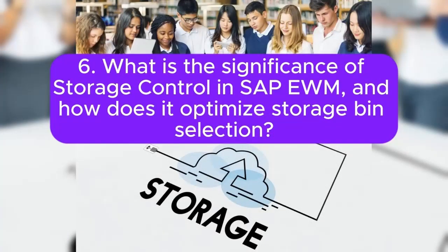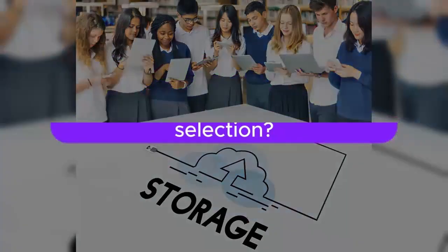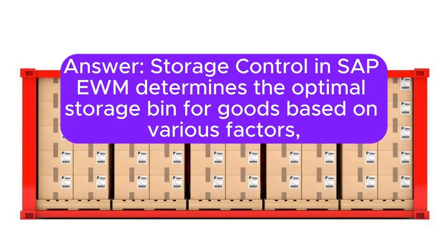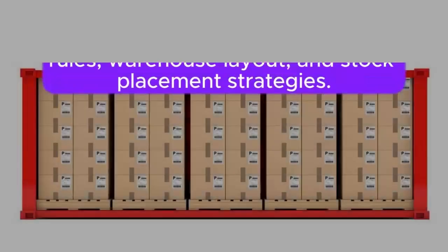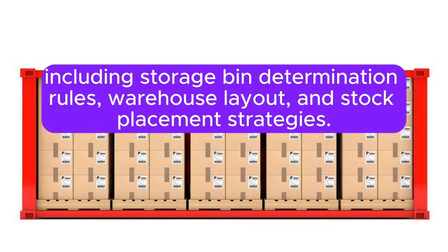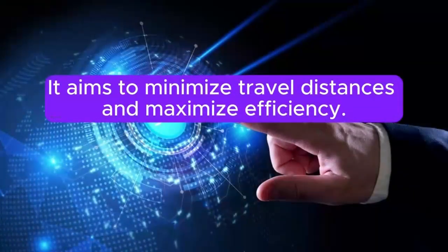Question 6: What is the significance of storage control in SAP EWM and how does it optimize storage bin selection? Storage control in SAP EWM determines the optimal storage bin for goods based on various factors, including storage bin determination rules, warehouse layout, and stock placement strategies. It aims to minimize travel distances and maximize efficiency.